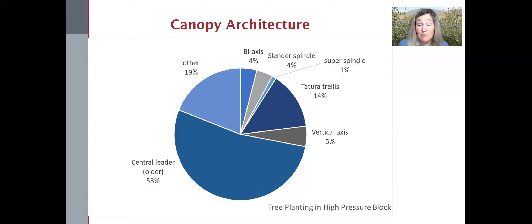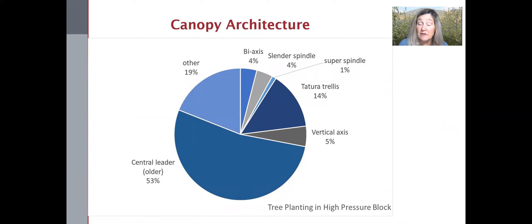where there are more places for codling moth larvae to cocoon and the canopy is more three-dimensional and harder to get spray coverage. However, no planting system makes you immune from codling moth pressure because so many factors are involved.